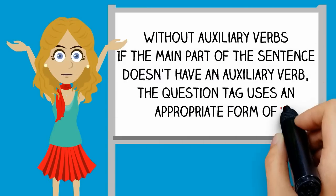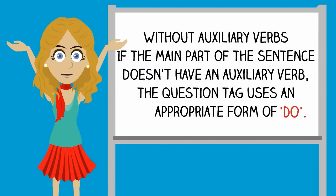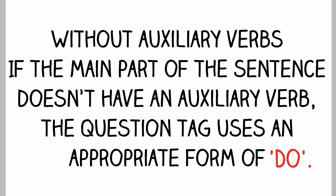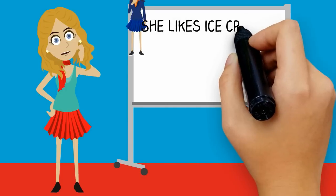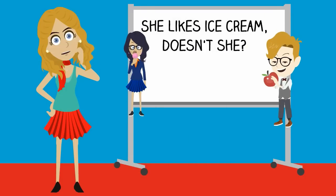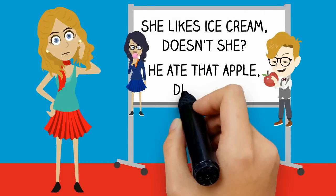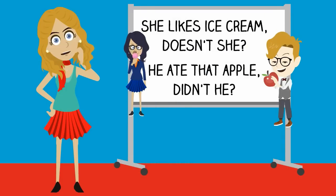Without auxiliary verbs, if the main part of the sentence doesn't have an auxiliary verb, the question tag uses an appropriate form of do. She likes ice cream, doesn't she? He ate that apple, didn't he?